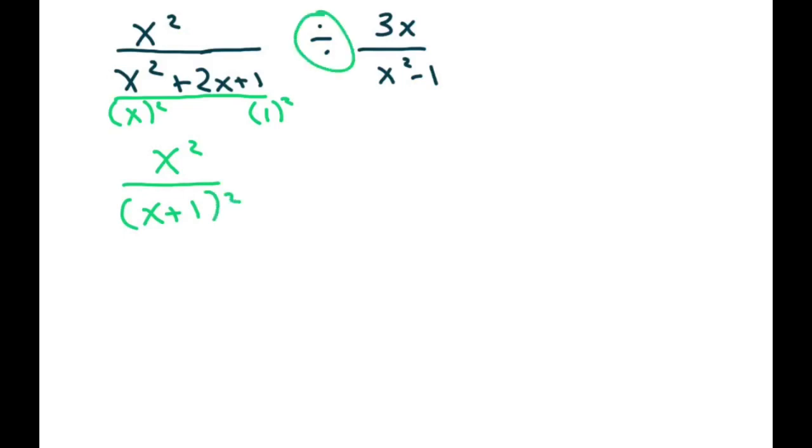Now I'm going to switch this to a times and flip these two. Now this one is a difference of squares, so that's just going to be x minus 1 times x plus 1. Then I have 3x.